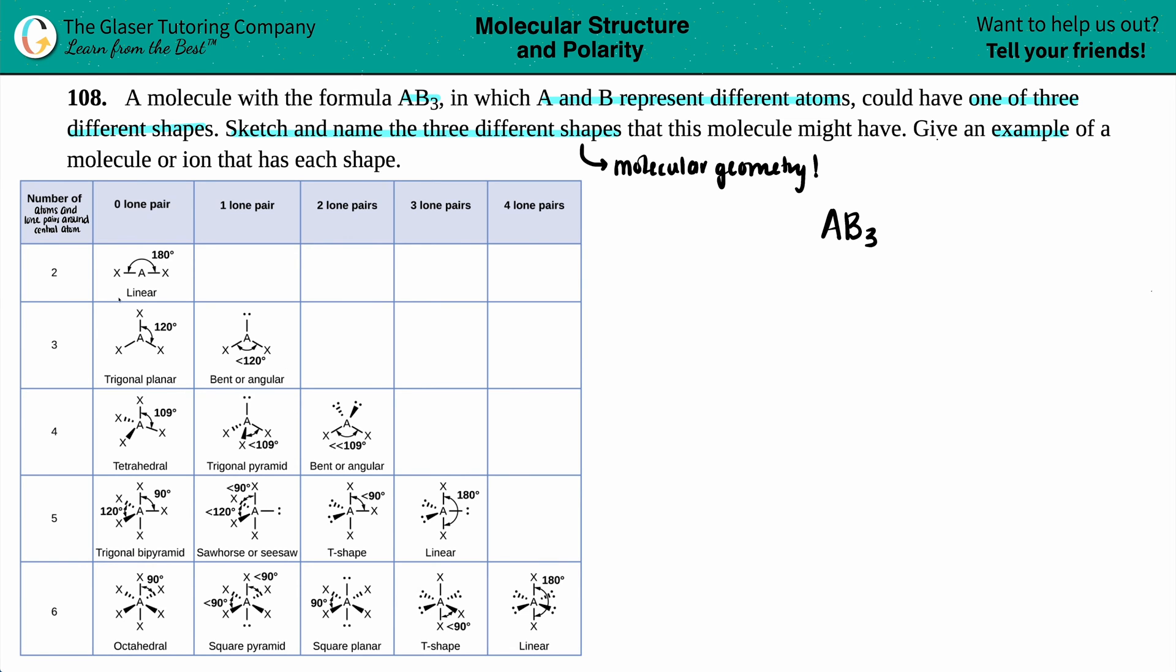So the first one that I see is I see this one. Here's an A in the middle that has the three x's. That would be the three b's. So let's go for it.